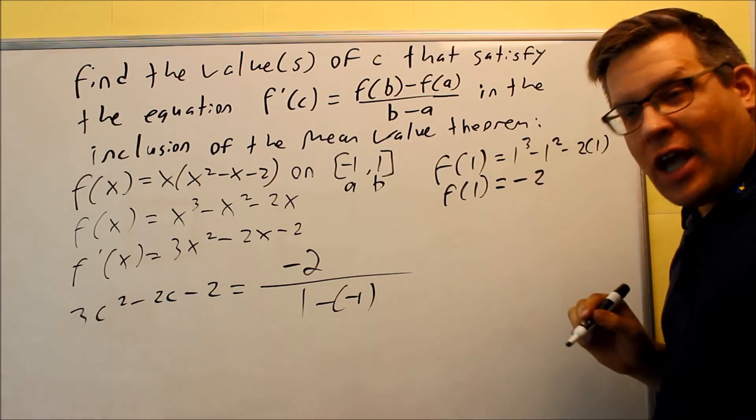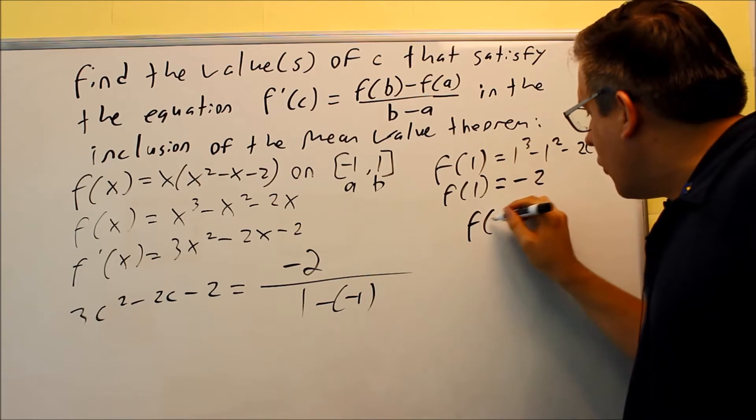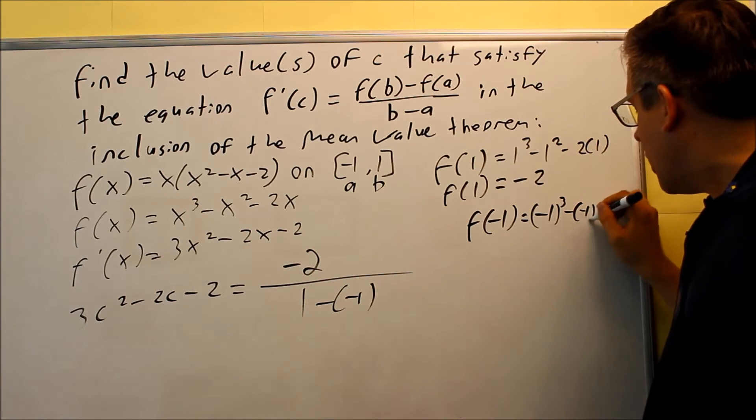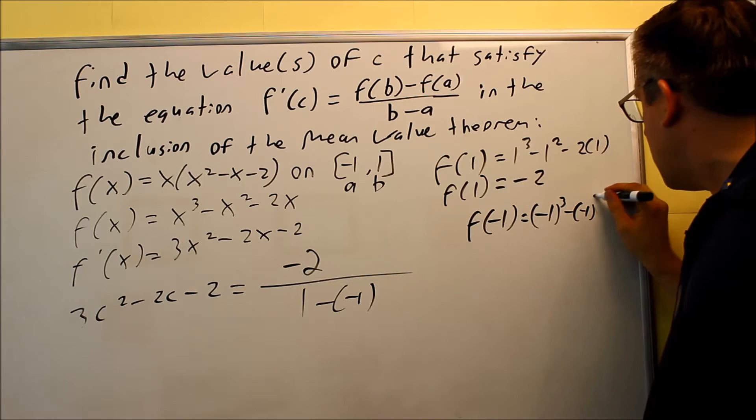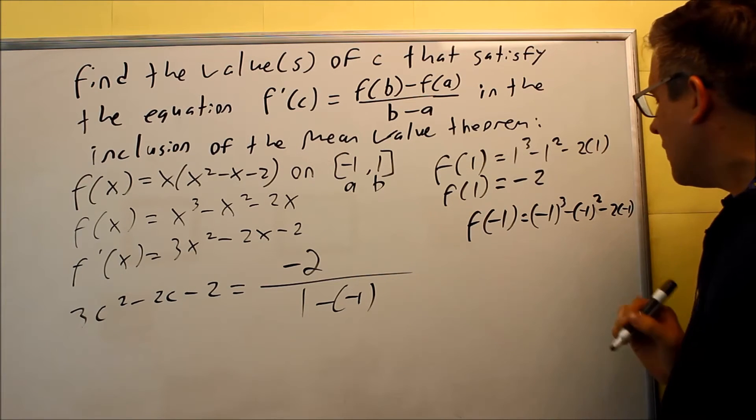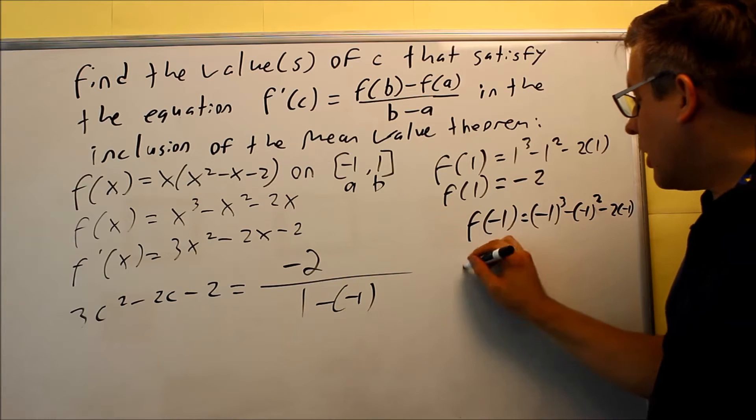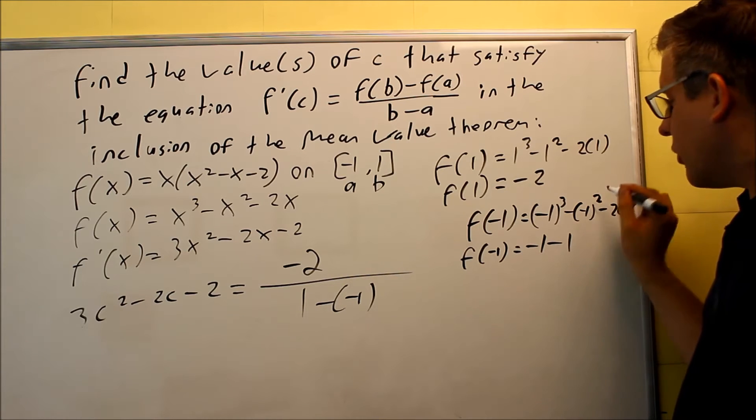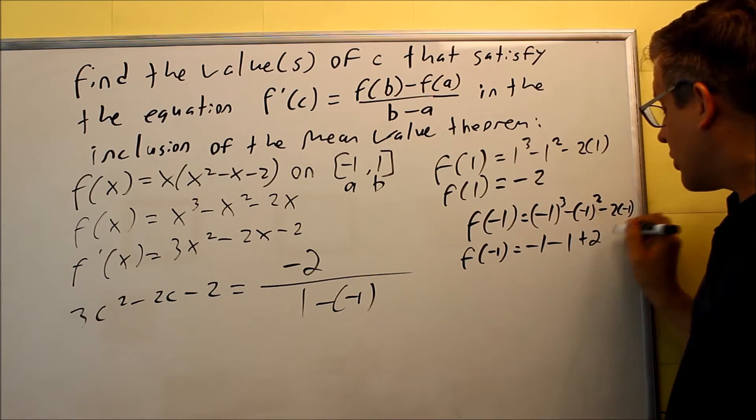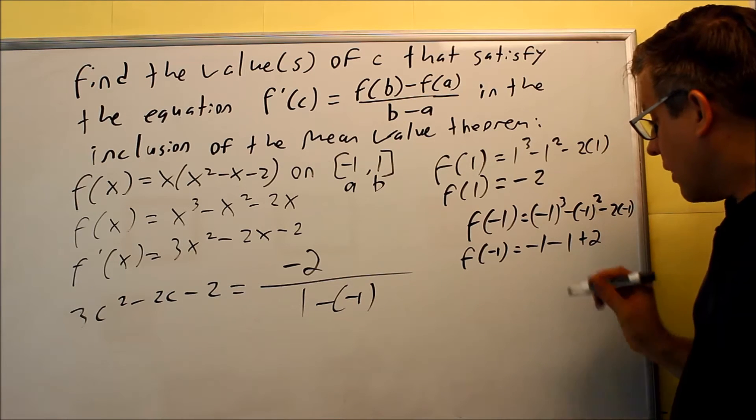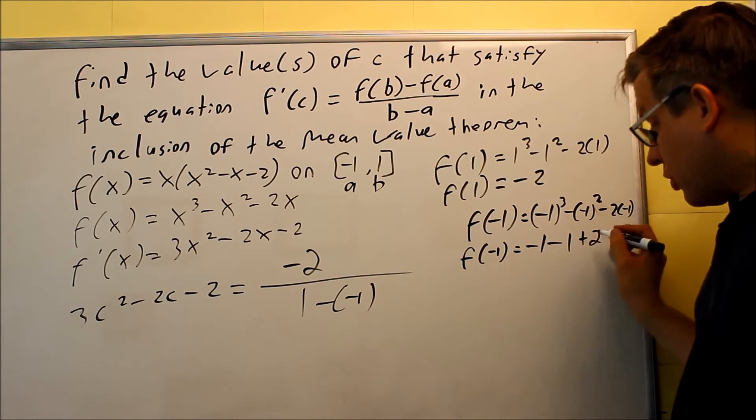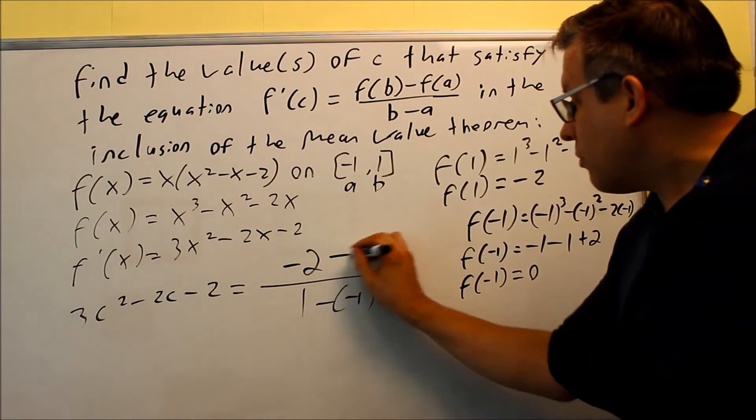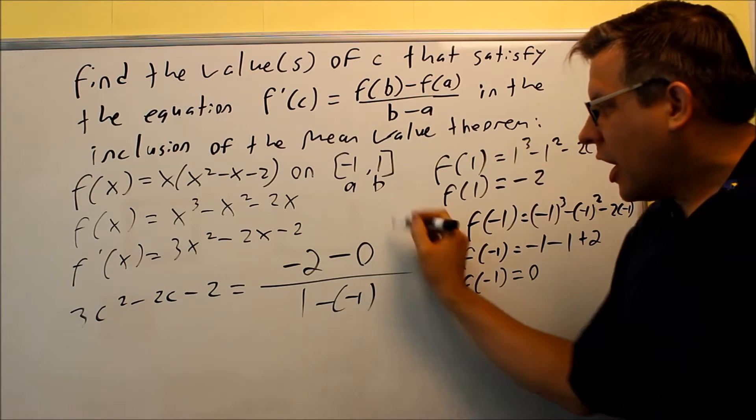Next, I want to find F of A. It's an F of negative 1. I'm going to put that into this one. Negative 1 cubed minus negative 1 squared. And I get minus 2 times negative 1. So putting that in there, I'll get F of negative 1 is going to be equal to negative 1 minus 1 here because negative 1 squared is positive 1 plus 2. I have two negatives there. Negative 1 minus 1 is negative 2 plus 2, which means that F of negative 1 gives us a 0. So now I can put that into this part of the formula. I have this now.